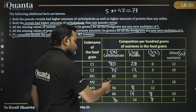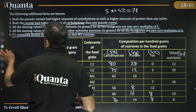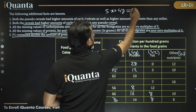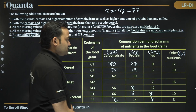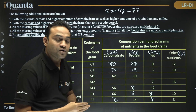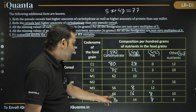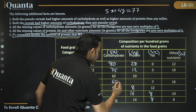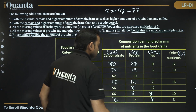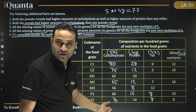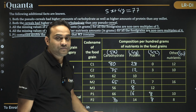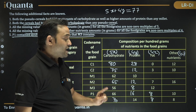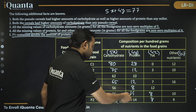For M1: carbs must be less than 66 (since P1 carbs = 66 and pseudo cereals must exceed millets). Known values for M1 sum to 23, leaving 77. Carbs must be an odd multiple of 5 less than 66. Trying 65 gives protein = 12, which works. Trying 55 gives protein = 22, which is not a multiple of 4. So M1 carbs = 65, protein = 12.